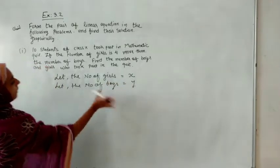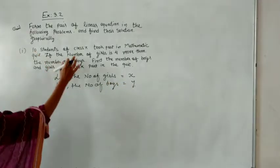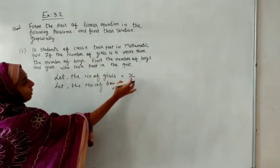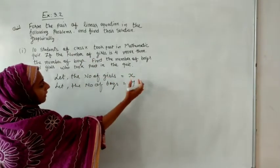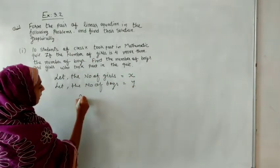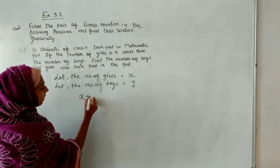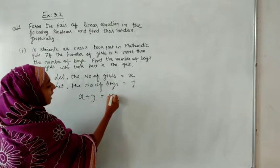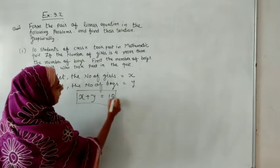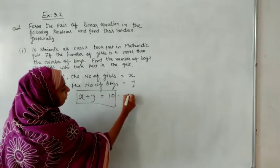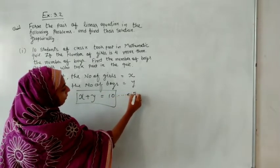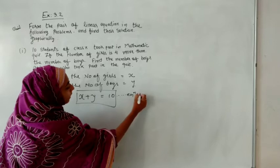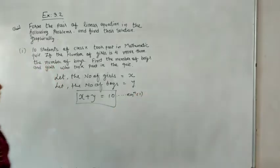All students are either girls or boys, and there are 10 total. So equation number 1 will be x plus y is equal to 10.